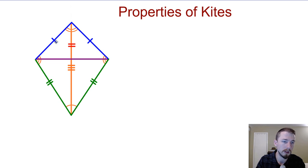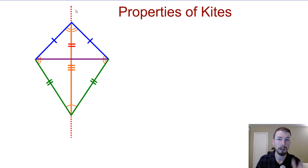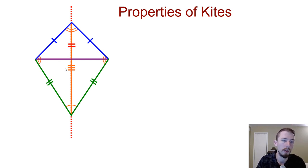We have the same side here. So by side-angle-side, the two top triangles are the same. We can do the same thing down here — by side-angle-side, the two bottom triangles are the same as well. The easiest way to remember all the properties of a kite is because we have a line of symmetry. There's one line of symmetry — in this case a vertical one — which means all the angles and everything that happens on the right side of the kite has to happen on the left side as well.